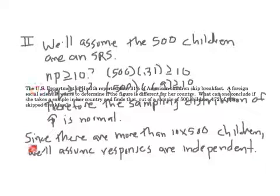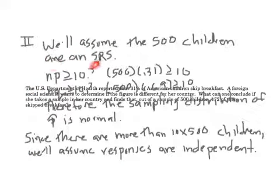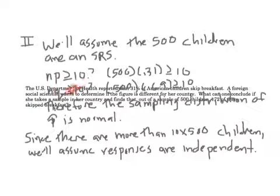Now we're at step two — checking our conditions. We'll assume the 500 children are a simple random sample. When you're doing proportions, it's no longer the n greater than 30 problem. It's whether NP and NQ are greater than or equal to 10. Notice I'm using the P sub zero value here, not the P-hat value.